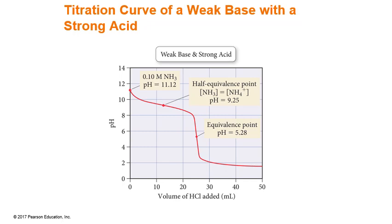How would we know that this is a titration curve of a weak base with a strong acid? Well, first off we look at the initial pH and we can see that it is above 7, so we know that inside our flask we have something that is basic.